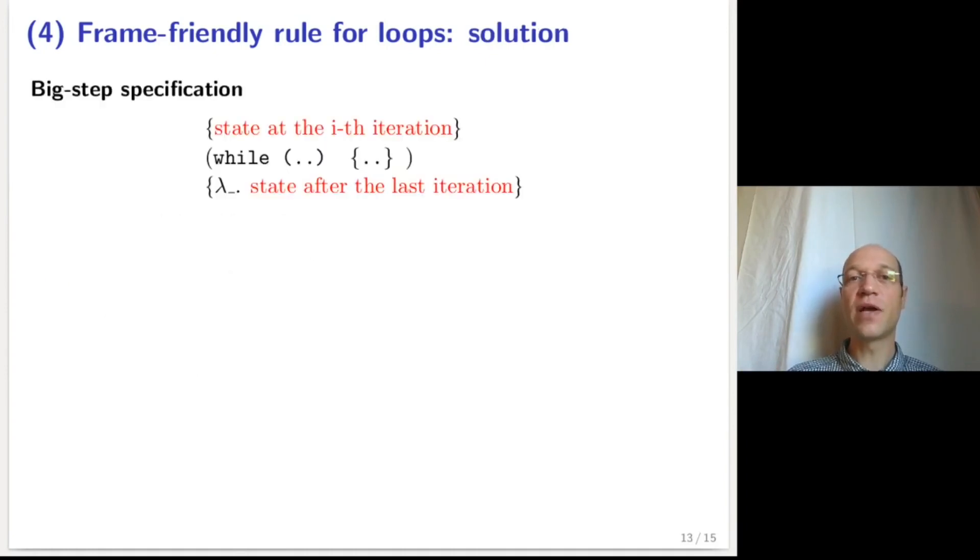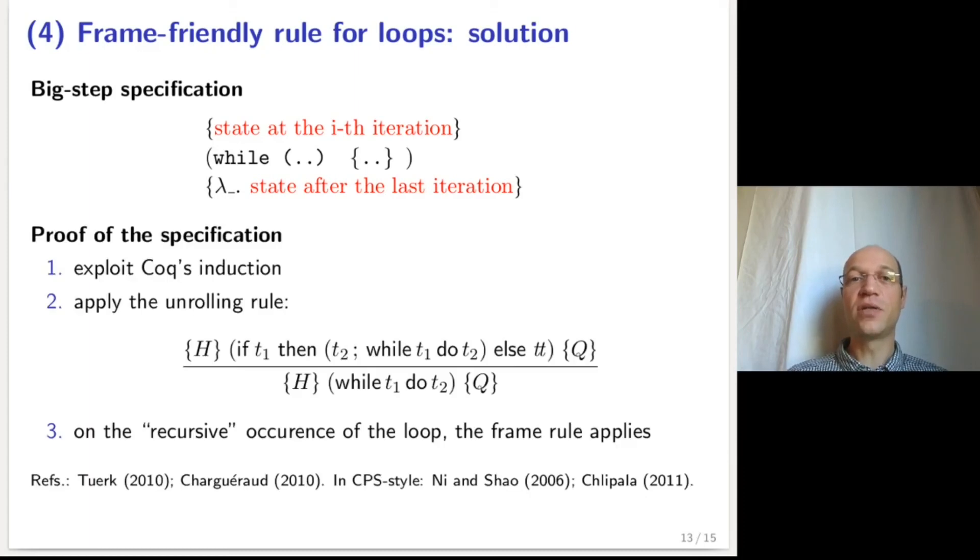The idea is to specify the while loop by relating the behavior, the state at the given iteration, with the state after the last iteration. And such a specification can be established by induction, using Coq's induction mechanism, by applying the following unrolling rule, which essentially unfolds a while loop one iteration. This rule introduces a conditional, a sequence, and a recursive occurrence of the while loop. When reasoning about this recursive occurrence of the while loop, one may apply the frame rule to frame the parts of the list or of the tree that we are stepping over.